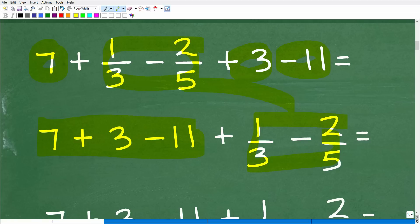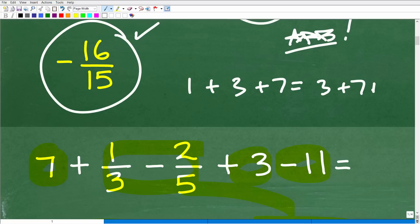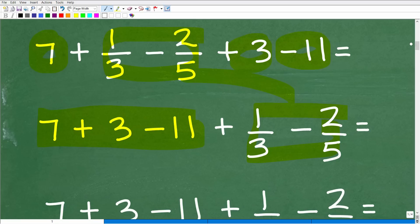But anyways, what I'm going to do is I'm going to group together all my little whole numbers here, or my integer values, and then we'll put our fractions over here. Now, we can do that because in addition, order doesn't make a difference. So we have 1 plus 3 plus 7. That's the same thing as 3 plus 7 plus 1. So we can change the order and still end up with the right answer. That is a lovely property of addition.